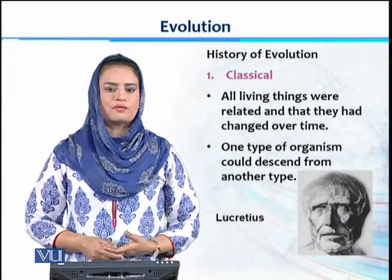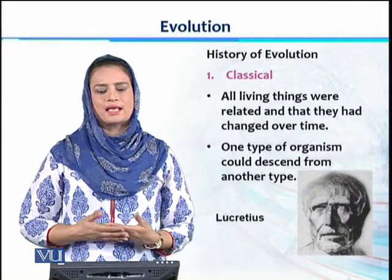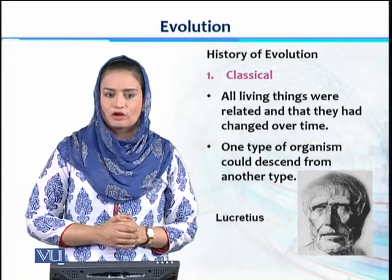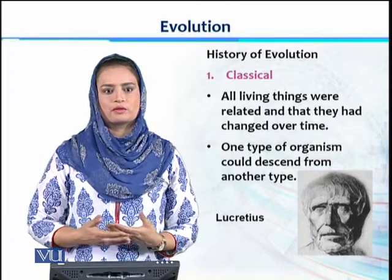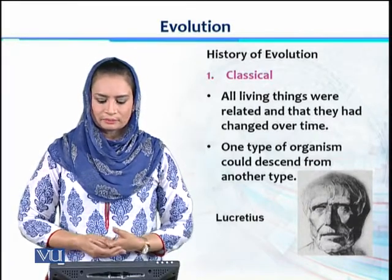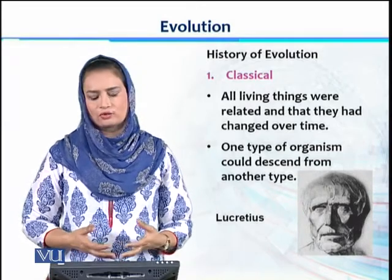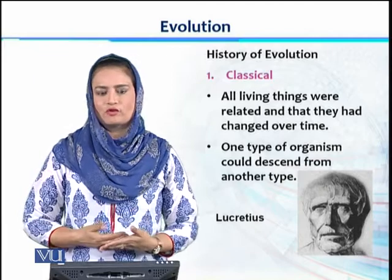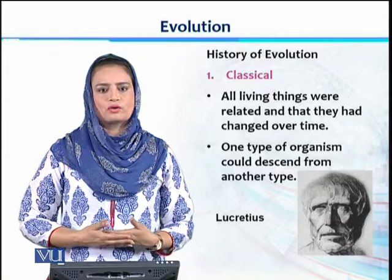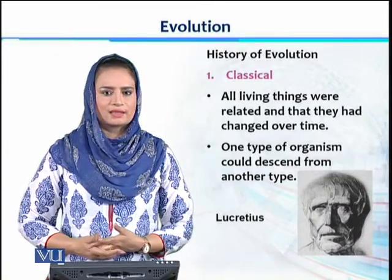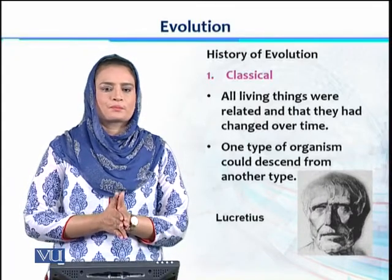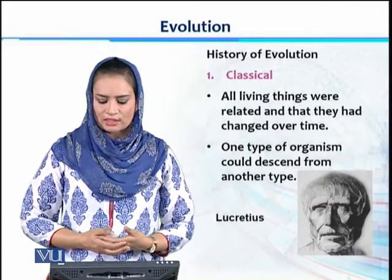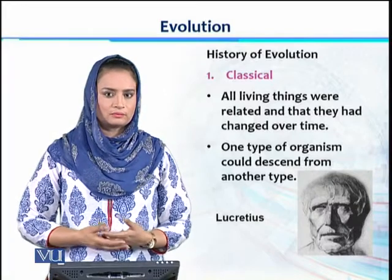The first phase is the Classical period — a time when scientists or philosophers believed more in their thoughts and wisdom rather than experiments. It was mostly dominated by Greek and Roman philosophers. During that period, it was considered that all living things are related to each other, and one type of organism could descend from another. There was no concept of species, genes, or transfer of characteristics. Lucretius was a prominent philosopher of this era.